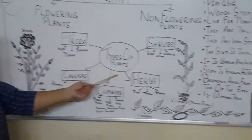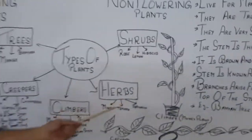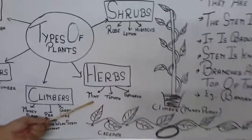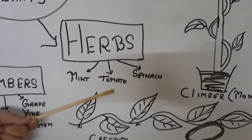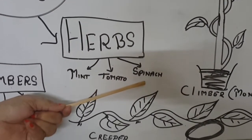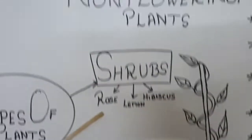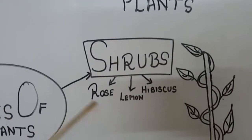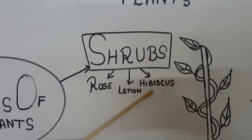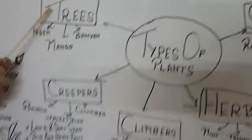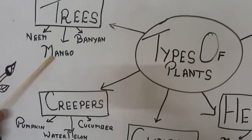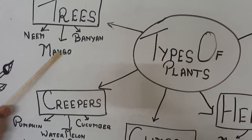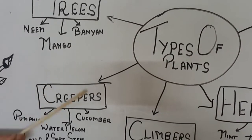The examples of herbs are mint, tomato, and spinach. Examples of shrubs are rose, lemon, and hibiscus. Examples of trees are the neem tree, mango, and banyan tree. Then let's look at creepers.